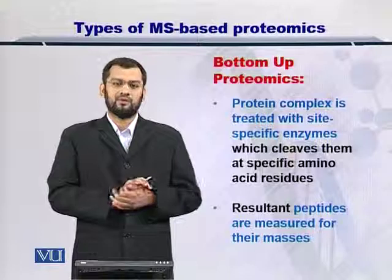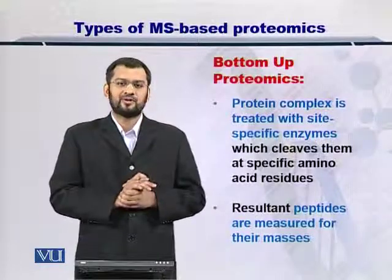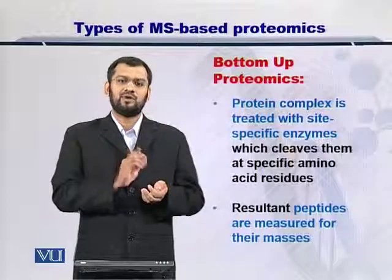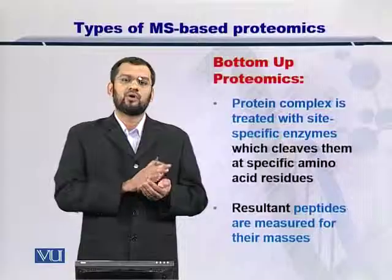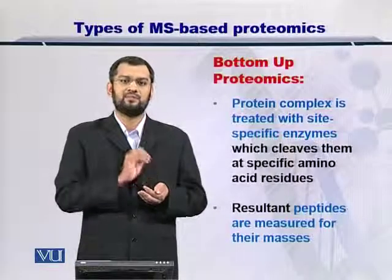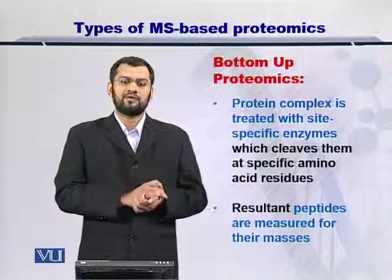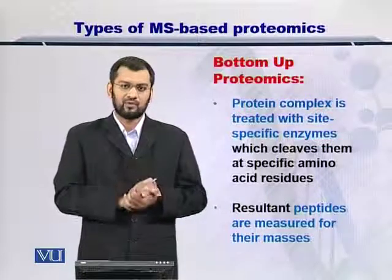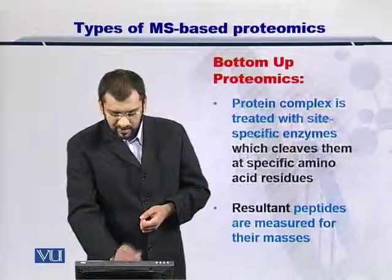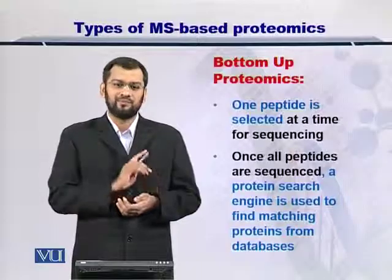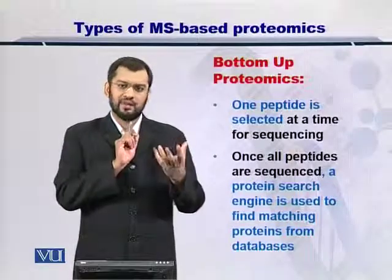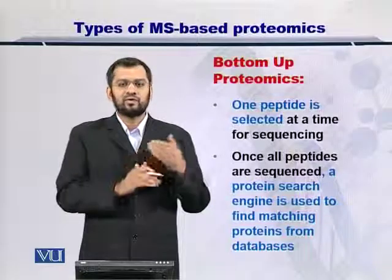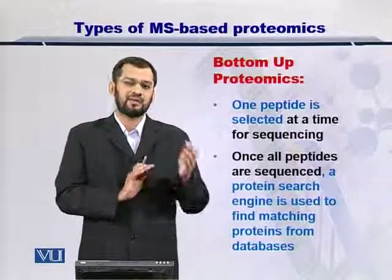In bottom-up proteomics, the protein complex is first treated with a site-specific enzyme. If you have multiple proteins in a sample and treat them with an enzyme, the enzyme will cut all the proteins at the site on which it binds. This results in lots of peptides from different proteins, all having been cut at the same residue. Next, these peptides are measured for their mass, and for that you select one peptide at a time. Once you select one peptide, you detect its deflection and record the mass. You can repeat this process to measure the mass of all peptides in the sample.